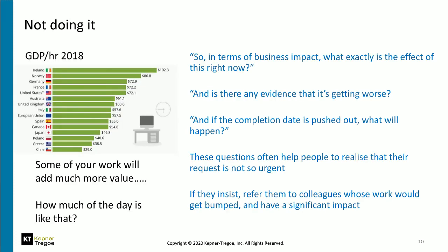That brings me to the point I promised you earlier: the beauty of not doing stuff. Saying no is always hard because we're helpful people. When you finally see the slide appear on screen, you'll see an interesting little chart of GDP per hour — gross domestic product per hour in 2018 from different countries. Apparently, people in Ireland produce $102 worth of output per hour, while in the United Kingdom it was only $60 in 2018. From your own point of view, think about how much value you really add. Your work may be worth $100 an hour, maybe $10,000 an hour or even more. Whatever the value, you won't want to take your mind off it for lower-value tasks, however urgent.